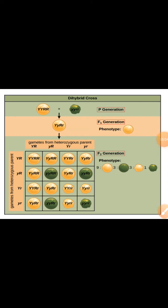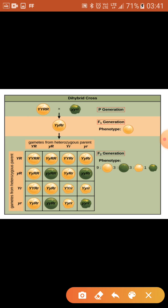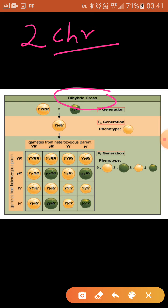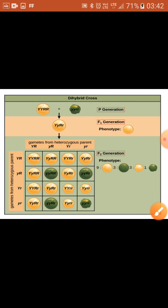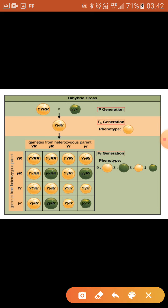Good morning students. Today we will study about the dihybrid cross. A dihybrid cross is a type of cross in which we consider two characteristics at a time, in contrast to the monohybrid cross where we consider one character at a time. Out of those seven contrasting characters, we will simultaneously use two characters — for example, as Mendel used: round yellow and wrinkled green.